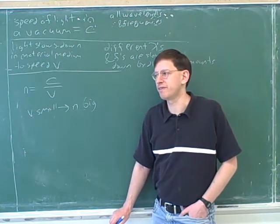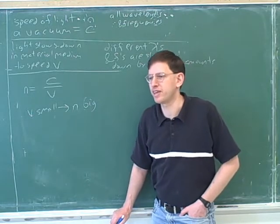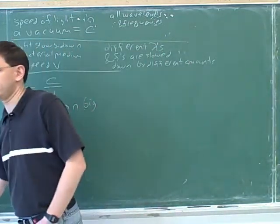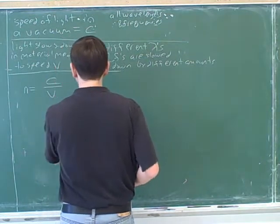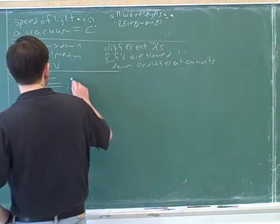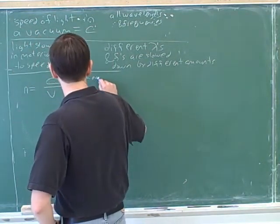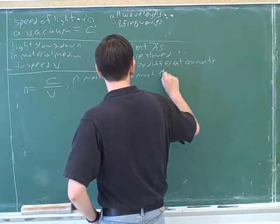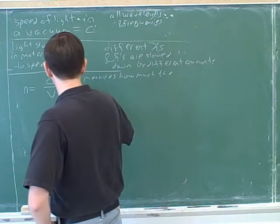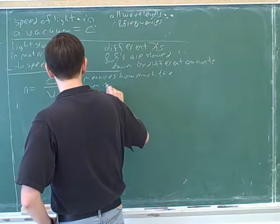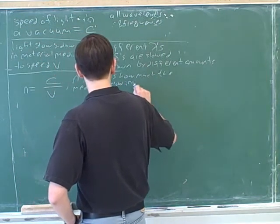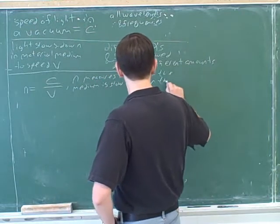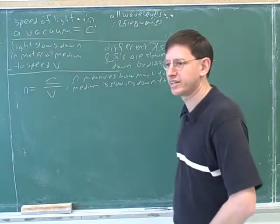Remember, in our kind of rough, common sense way of looking at it, we're thinking of the medium as if it was slowing down the light. That's not fully rigorous, but that's good enough for us. So N measures how much the medium is slowing down the light.